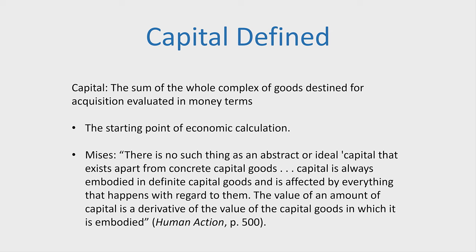The phrase 'destined for acquisition' means they are goods used for the production and sale of products to acquire income. Firms use factors of production — land, labor, capital goods — and they don't have them just to admire. They use them to produce other products. So capital is a monetary accounting fund embodied in capital goods.